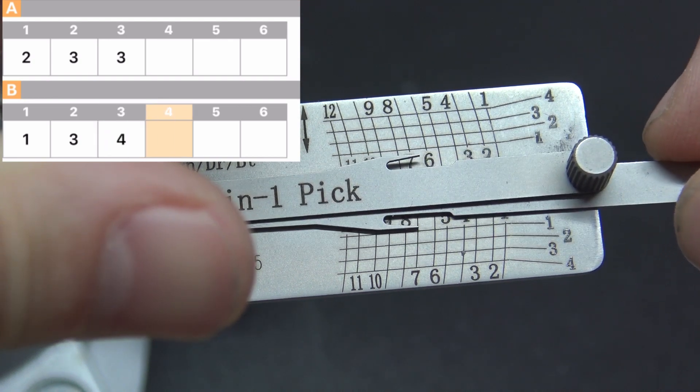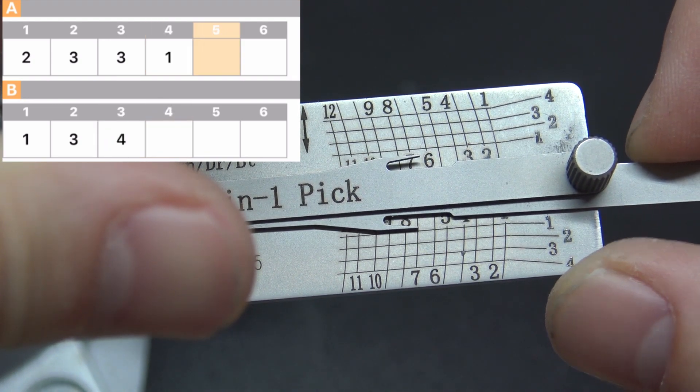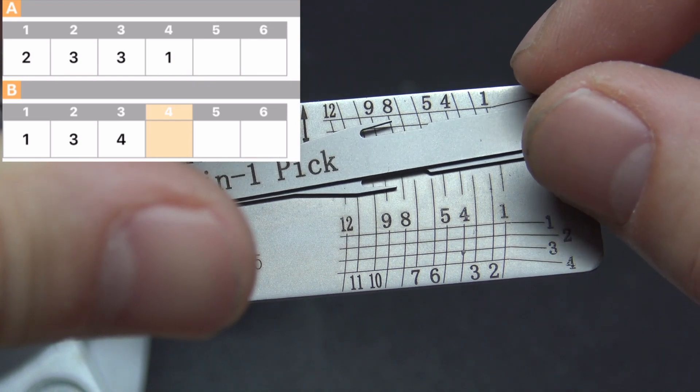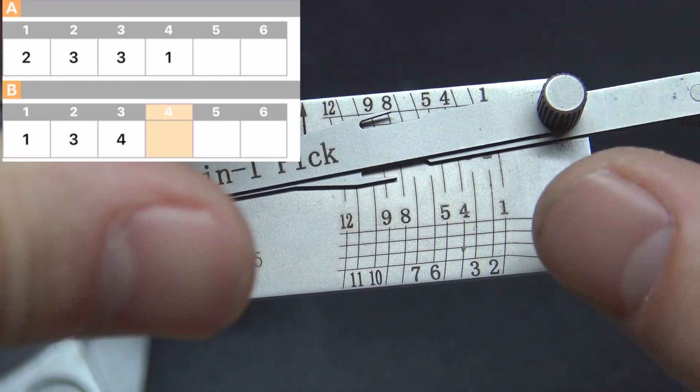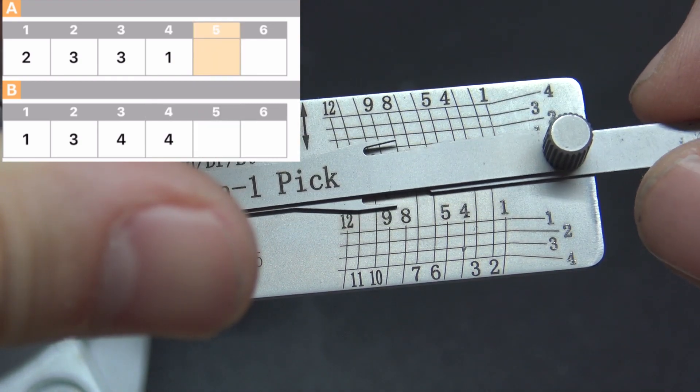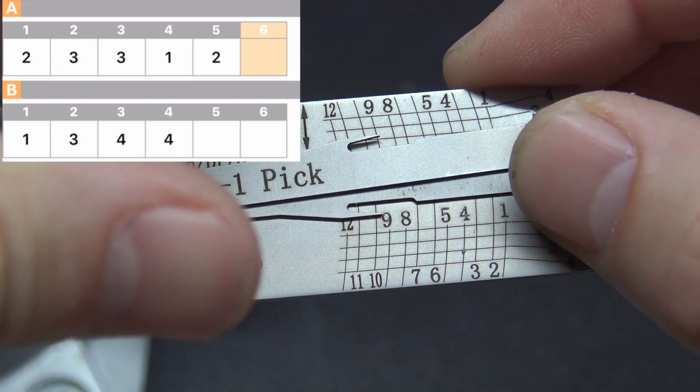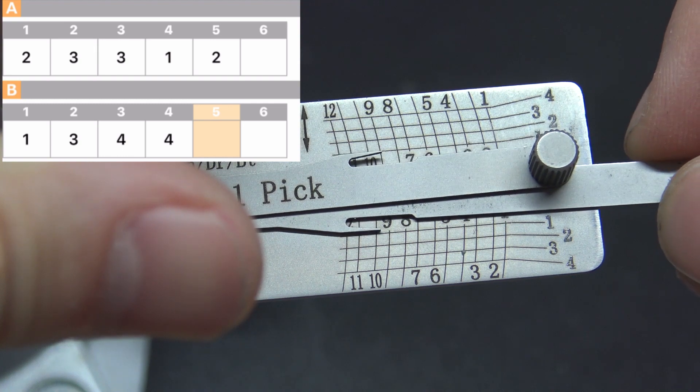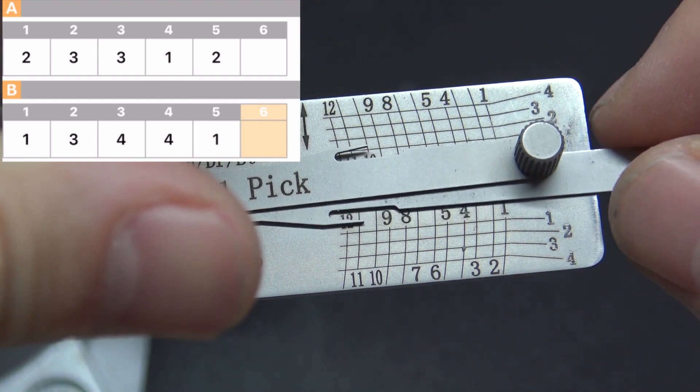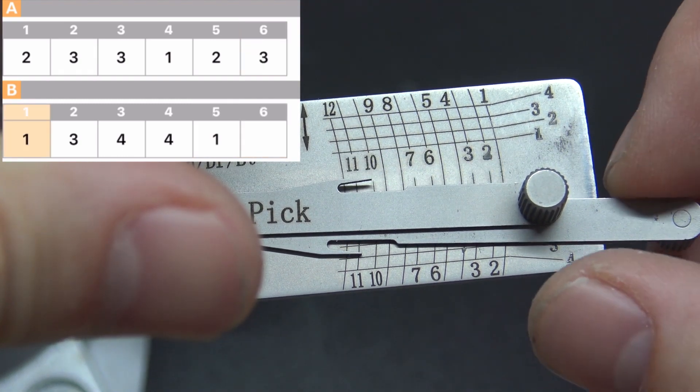Six is a four, seven is a one, eight is a four, nine is a two, ten is a one, eleven is a three.